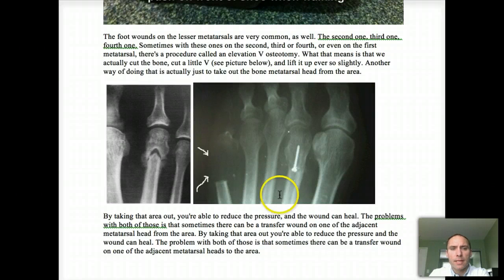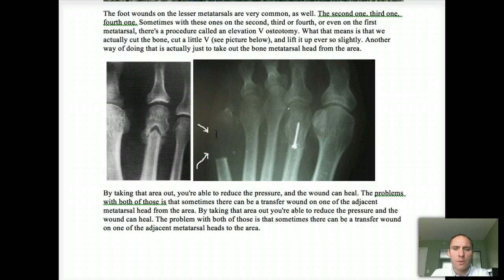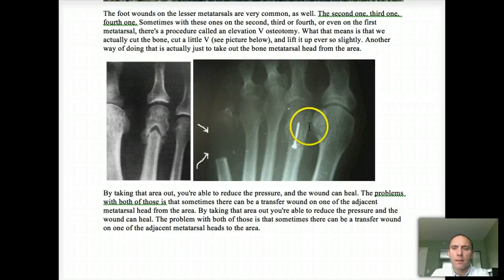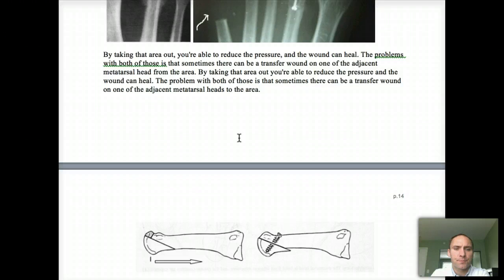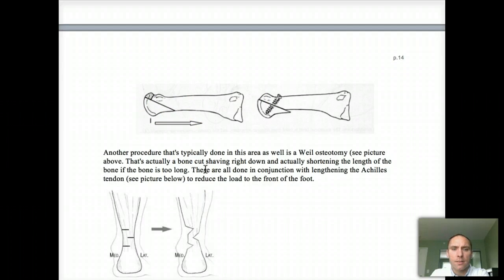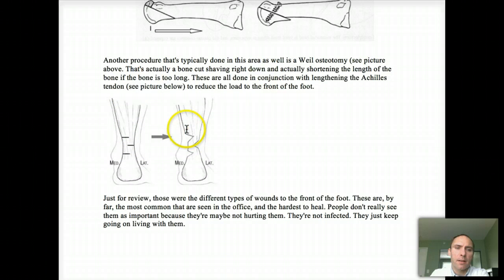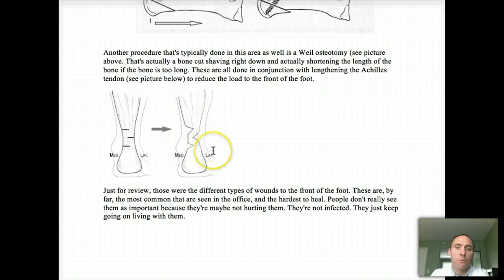Some of the surgical ways of treating it — especially if the bone is too far down — we may have to cut through the bone and lift it up, which is called a V-osteotomy. You can also just take out the bone entirely to get the pressure off. Be careful — when you lift up or remove a bone, sometimes there can be a transfer lesion to the area next door. An example of a shortening osteotomy helps to shorten it and reduce the pressure slightly. In conjunction, if you have a very tight Achilles tendon, this can increase the load to the front of the foot, and many times during diabetic foot surgery we have to loosen the Achilles tendon, as it's a big deforming force.